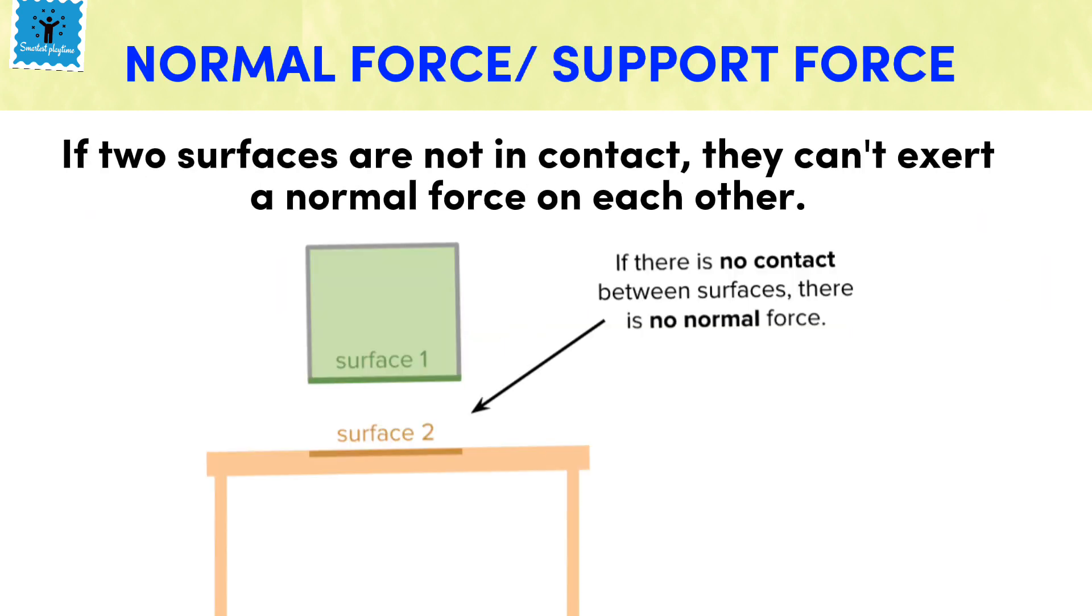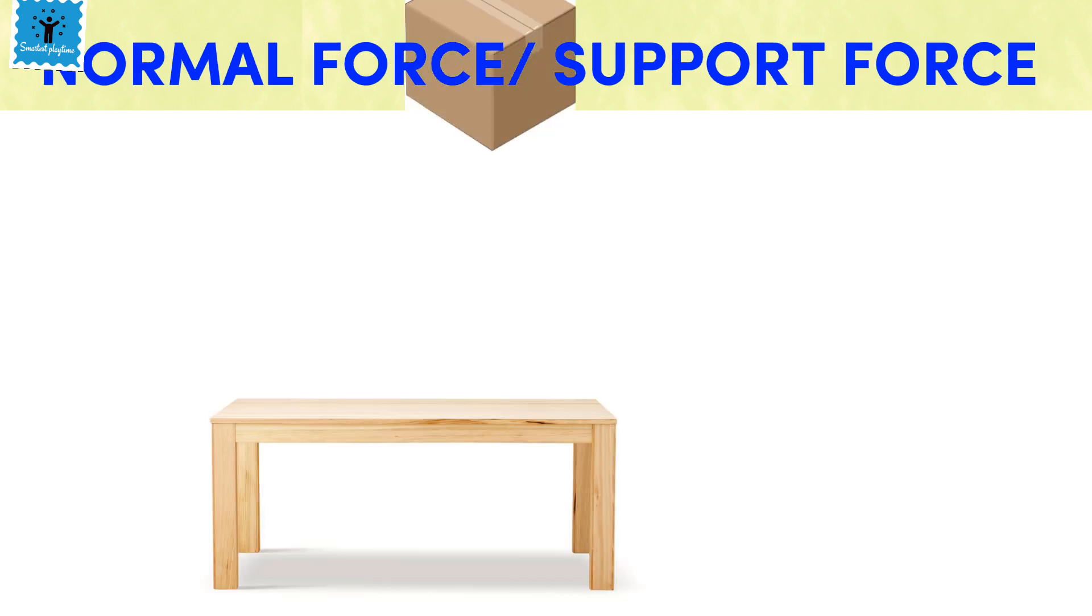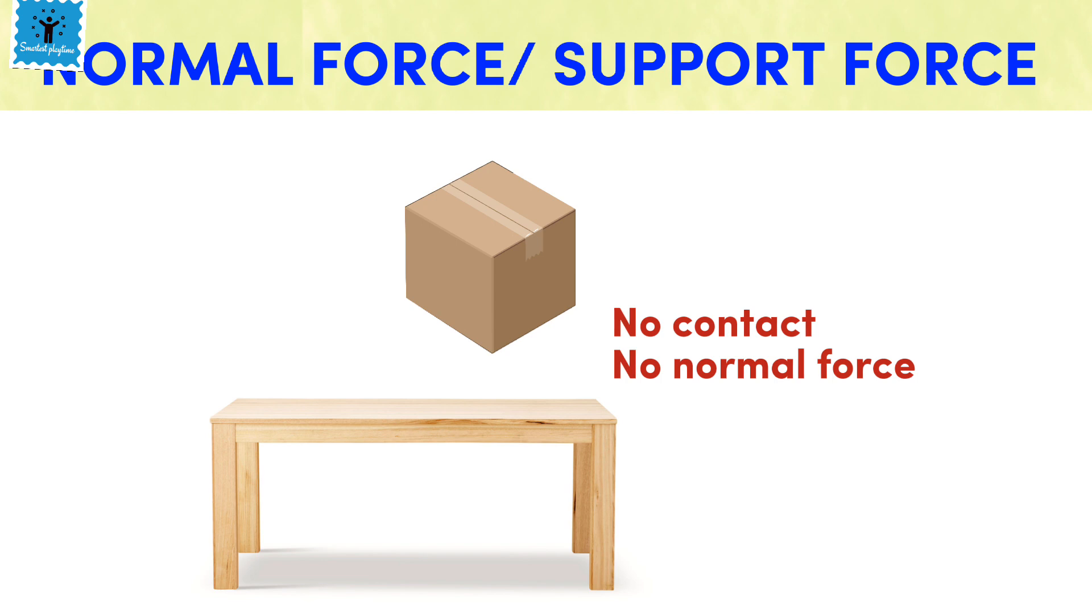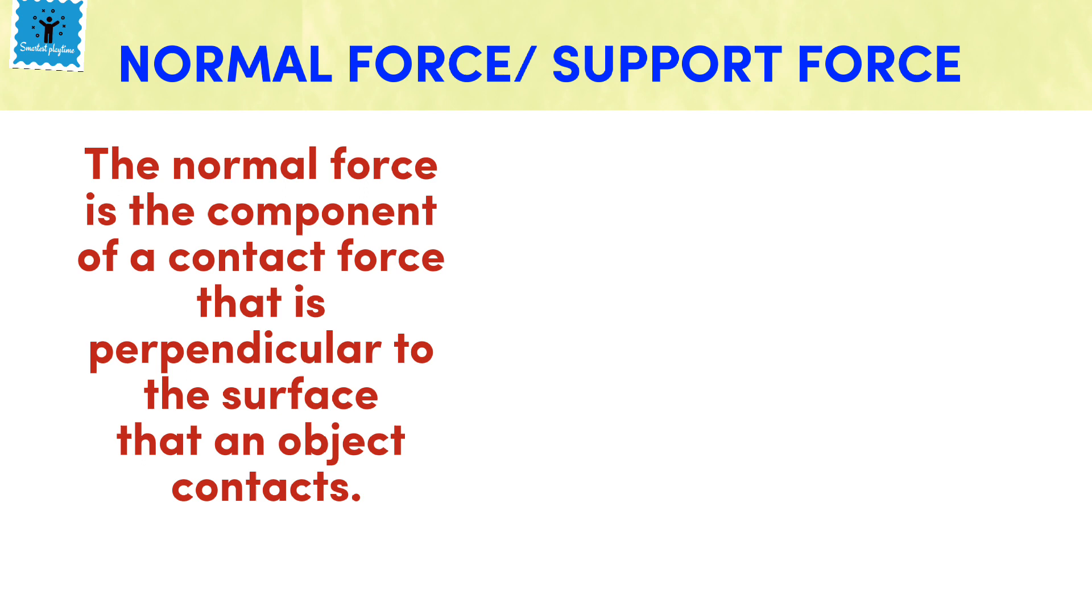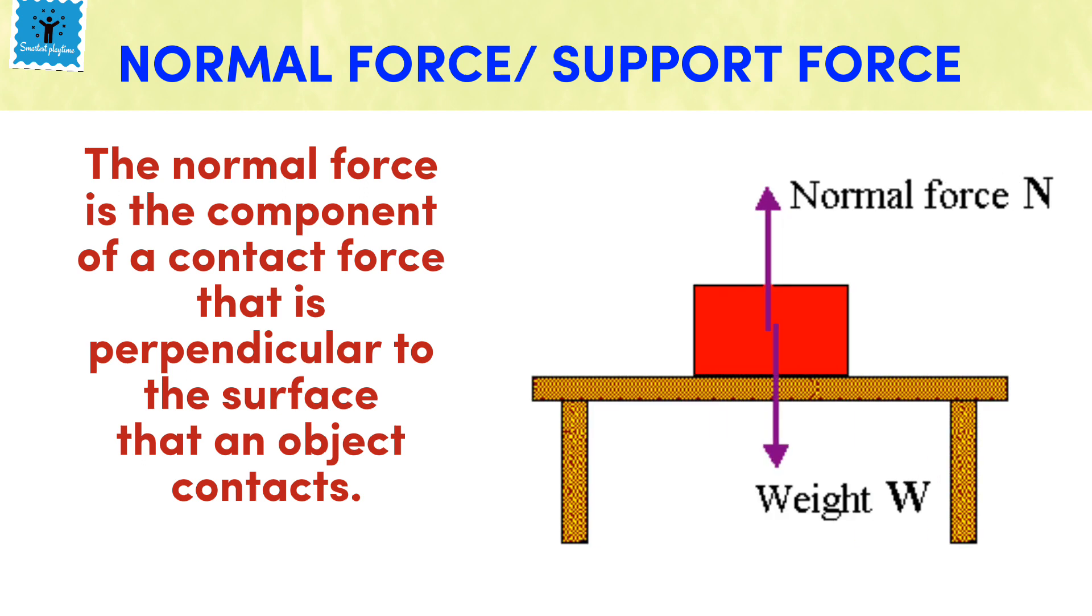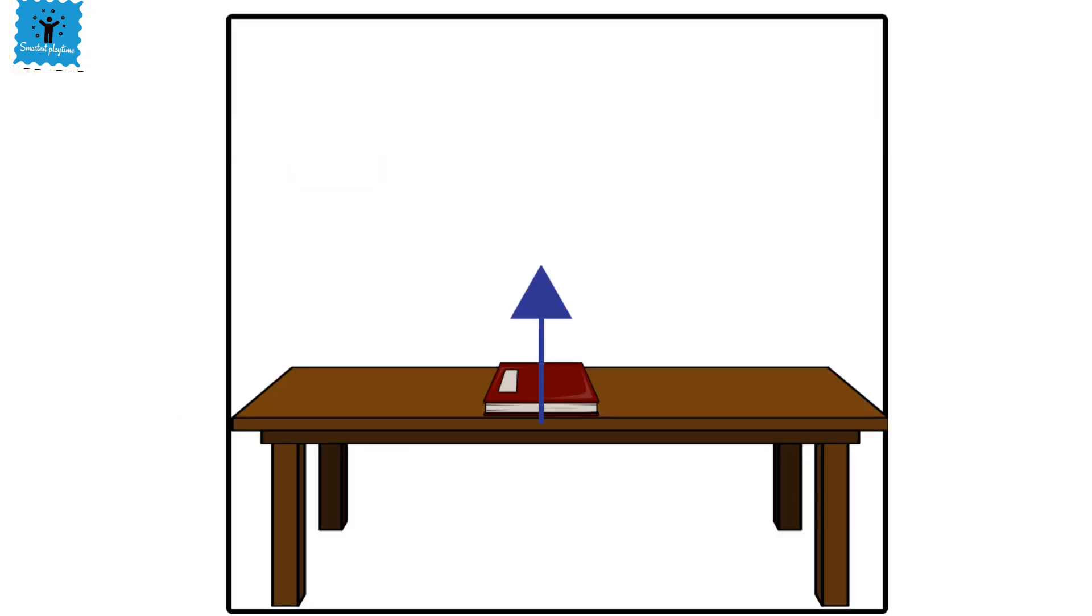If two surfaces are not in contact, they can't exert a normal force on each other. For example, the surface of a table and a box cannot exert normal force on each other if they are not in contact. However, when two surfaces are in contact, they exert a normal force on each other perpendicular to the contacting surfaces. For example, if a book is resting upon a surface, then the surface is exerting an upward force upon the book in order to support the weight of the book.